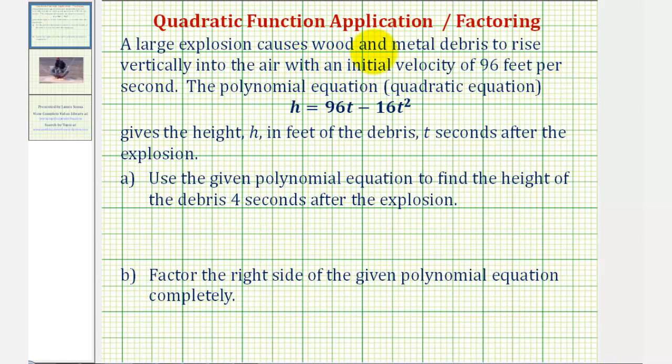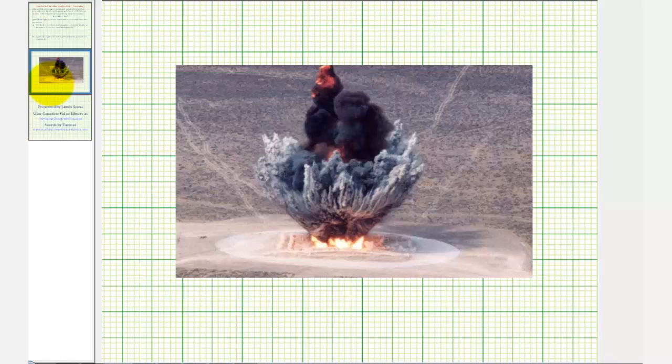A large explosion causes wood and metal debris to rise vertically in the air with an initial velocity of 96 feet per second. So for example, our explosion might look something like this.